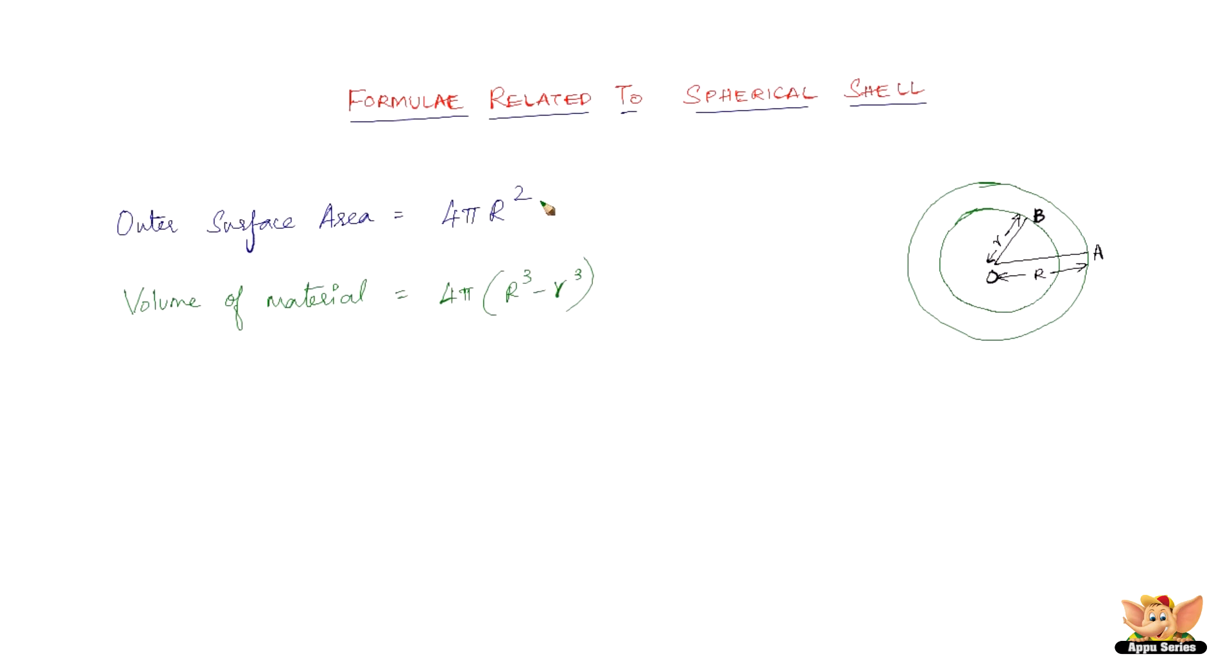The units for the outer surface area are squared units because it is area, and for the volume of the material it's going to be cubic units. Very simple data here, not much.